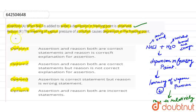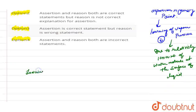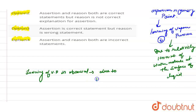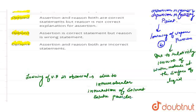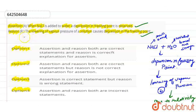So the assertion is correct. The lowering of vapor pressure of a solution causes depression in the freezing point. As we can see, the lowering of vapor pressure causes the depression in the freezing point due to the intermolecular interaction of solvent-solute particles. The lowering of vapor pressure is observed due to intermolecular interaction of solvent-solute particles, which causes depression in the freezing point. So both assertion and reason are correct, and reason is also explaining the assertion. Therefore, option 1 is the correct answer. Thank you!